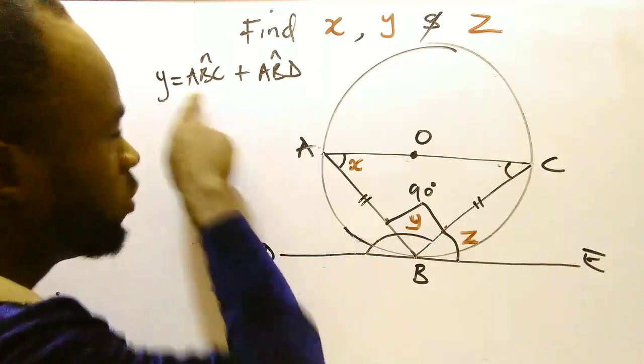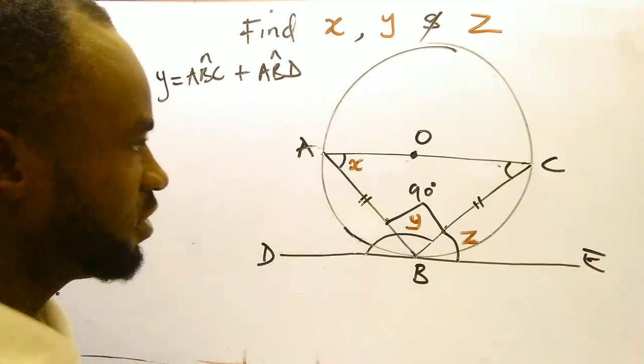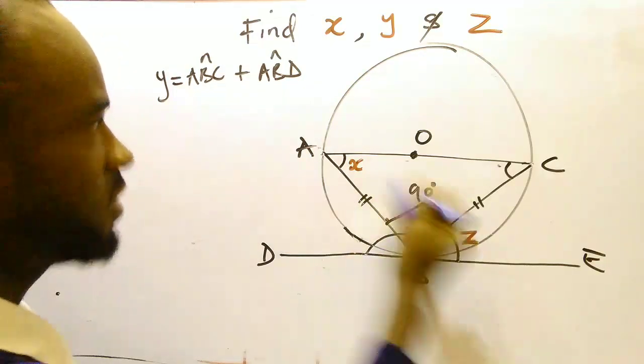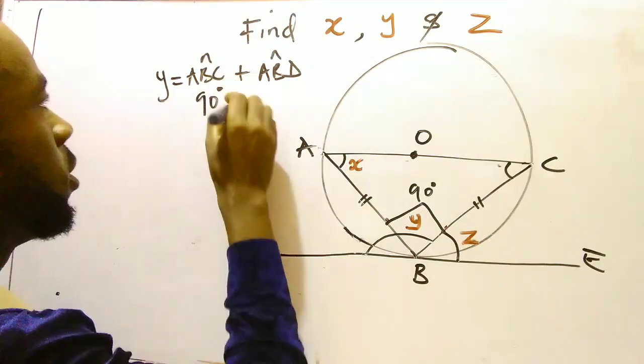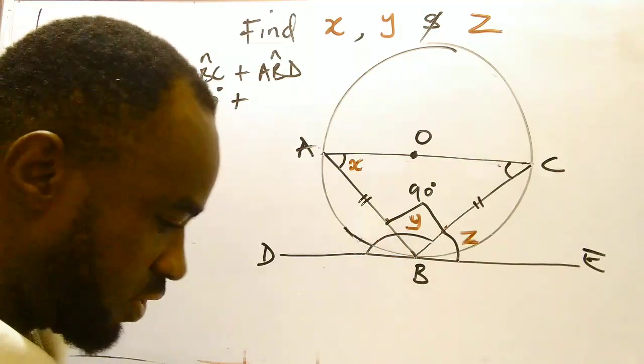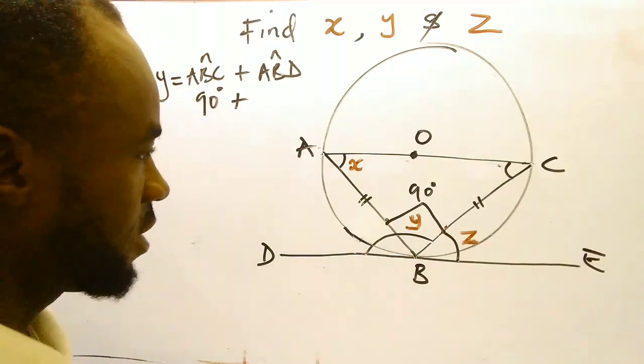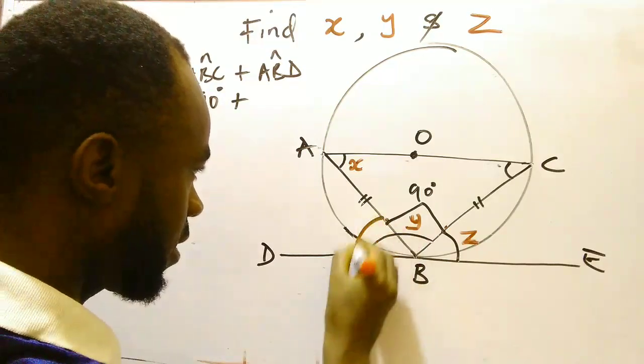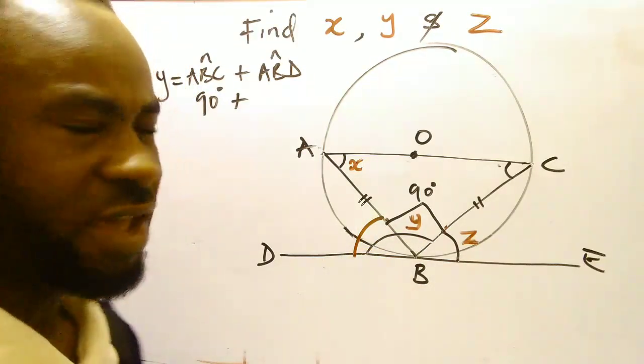Now since we know that Y is ABC plus ABD and we've already gotten our ABC as 90, all we need to get now is our ABD. That is this other side. Let me use the red marker for that. So we want to get here. Now how do we get there?